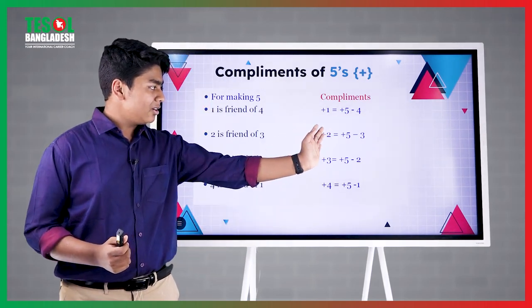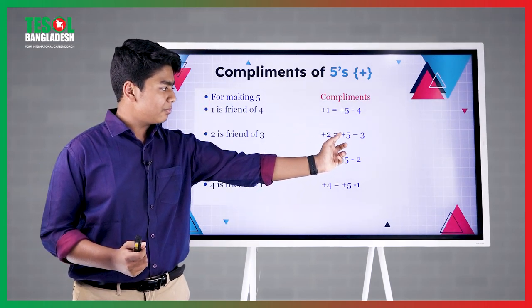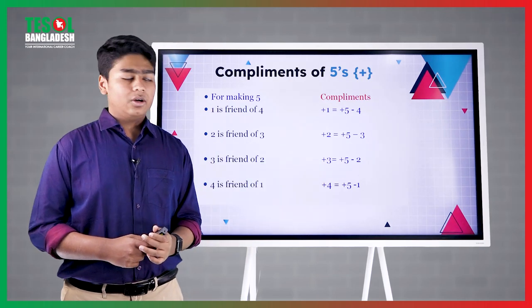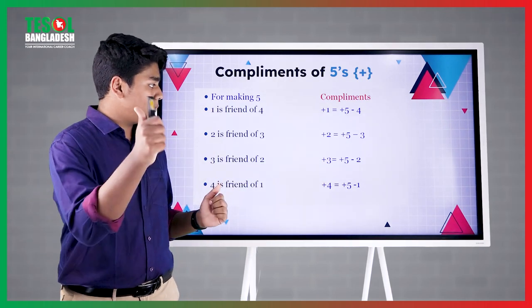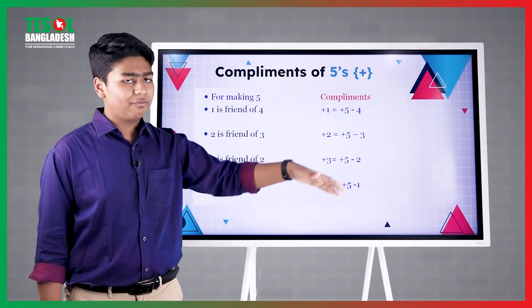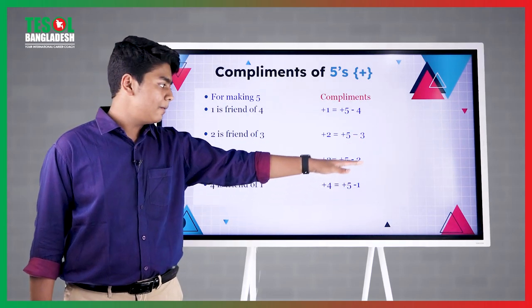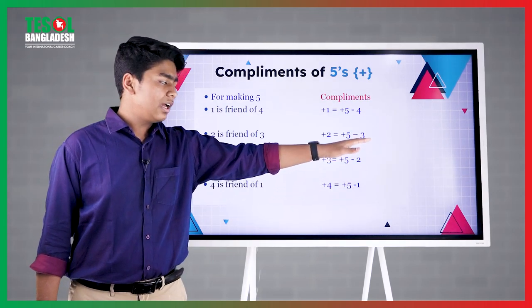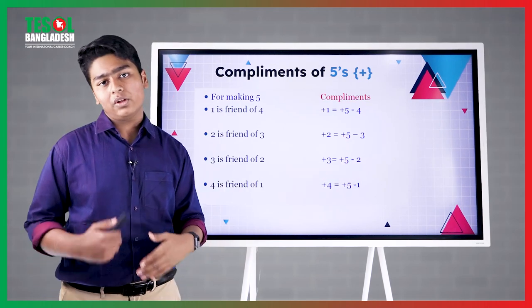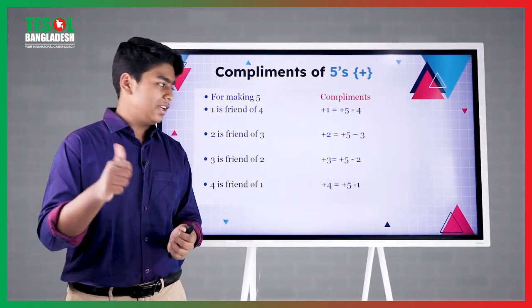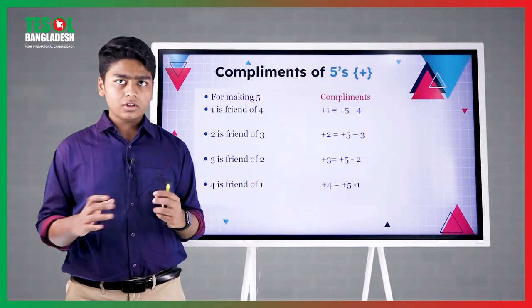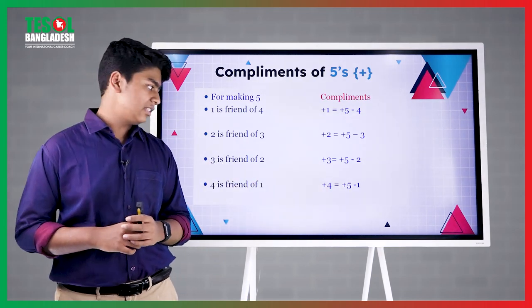Same here — plus 2 equals to plus 5 minus 3. So plus 2 equals to plus 5 minus 3, because 3 is the friend of 2, so it has to sacrifice and 5 will come to rescue. Brilliant. Then plus 3 — plus 3.